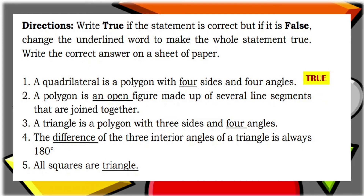Number two: A polygon is an open figure made up of several line segments that are joined together. The underlined word is 'open.' That is false — a polygon is a closed figure, not an open figure. Number three: A triangle is a polygon with three sides and four angles. The underlined word is 'four.' That is false — it should be three, because a triangle has three sides and three angles.